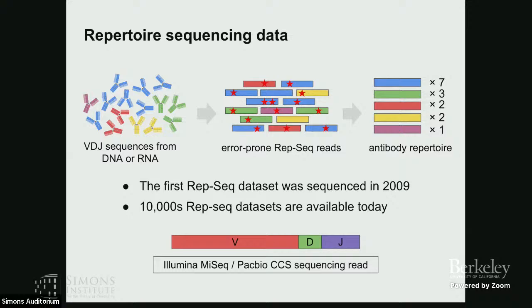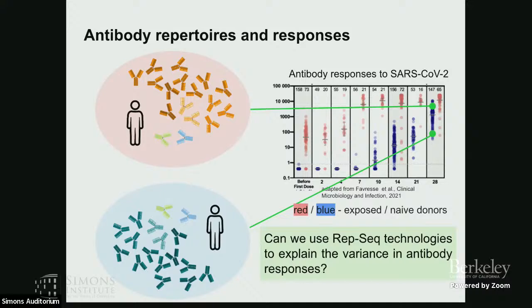We are interested in translating antibody repertoires into antibody responses. Here is a picture from one early paper about COVID responses when the mRNA vaccine was developed and tested on recovered patients and naive donors who had never seen COVID. After vaccination, responses go up in both groups. However, the distributions are truly wide and some people respond much worse compared to others, and using repertoire sequence data can help explain this variation.